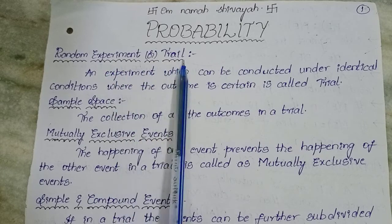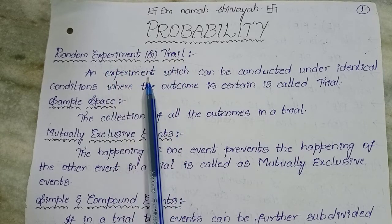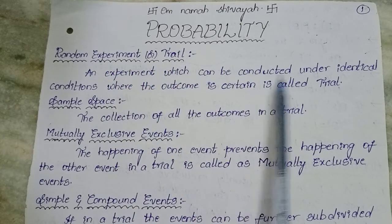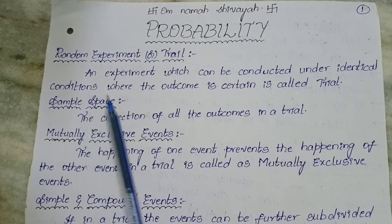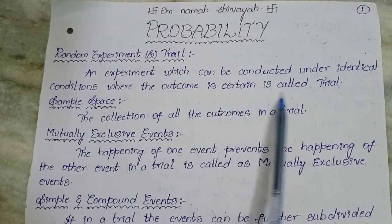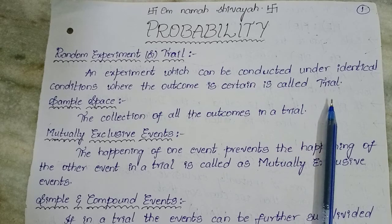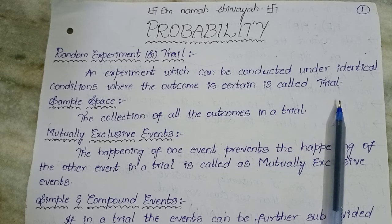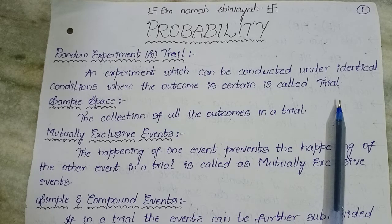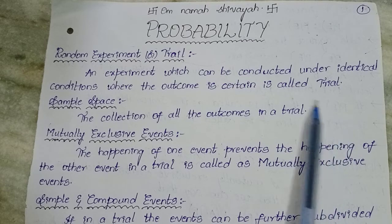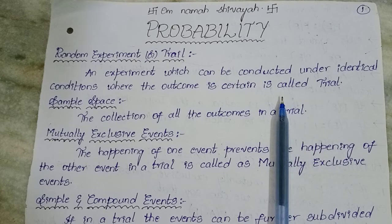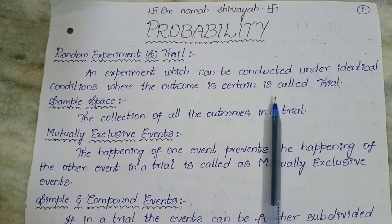Random experiment or trial. An experiment which can be conducted under identical conditions where the outcome is certain is called as trial. If you toss a coin, the outcome will be either head or tail. So the outcome is certain here — it may be yes or no. That type of experiment is known as a random experiment or trial.